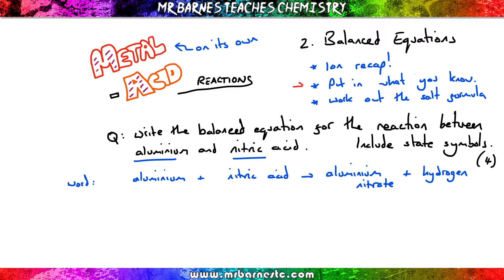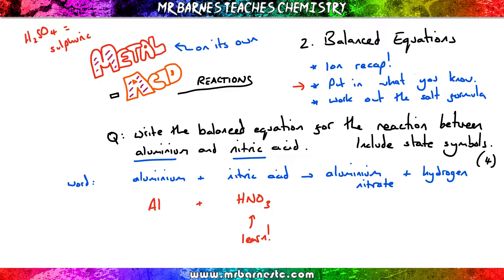So then we put in what we know. Aluminium is Al. Nitric acid — you just need to remember and learn it — is HNO₃. Sulfuric acid, the other one you need to remember, is H₂SO₄. And hydrogen is H₂.